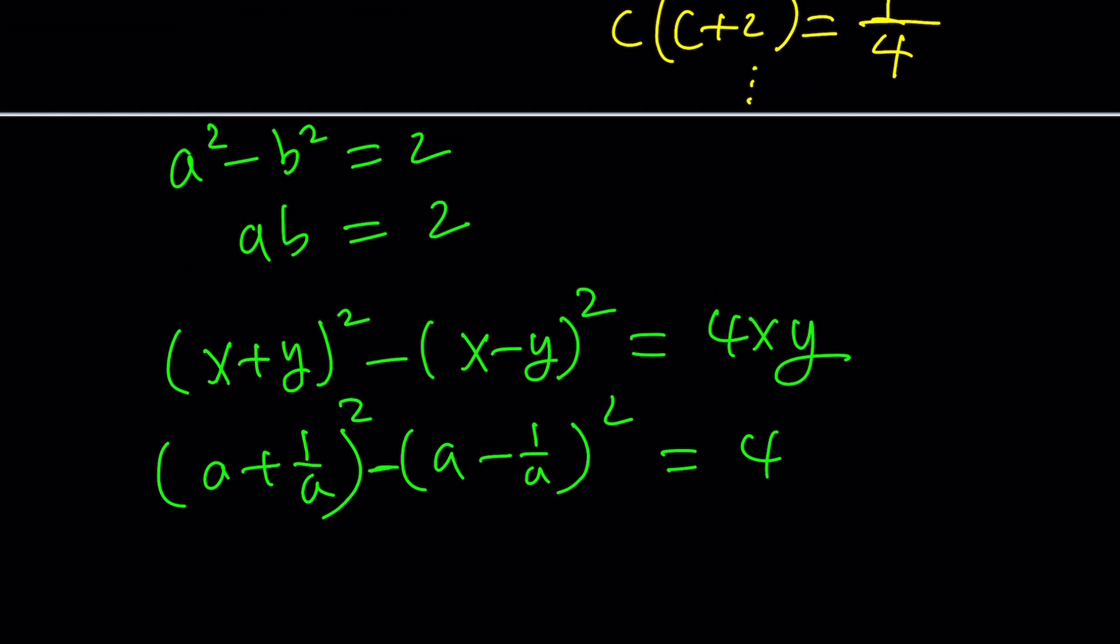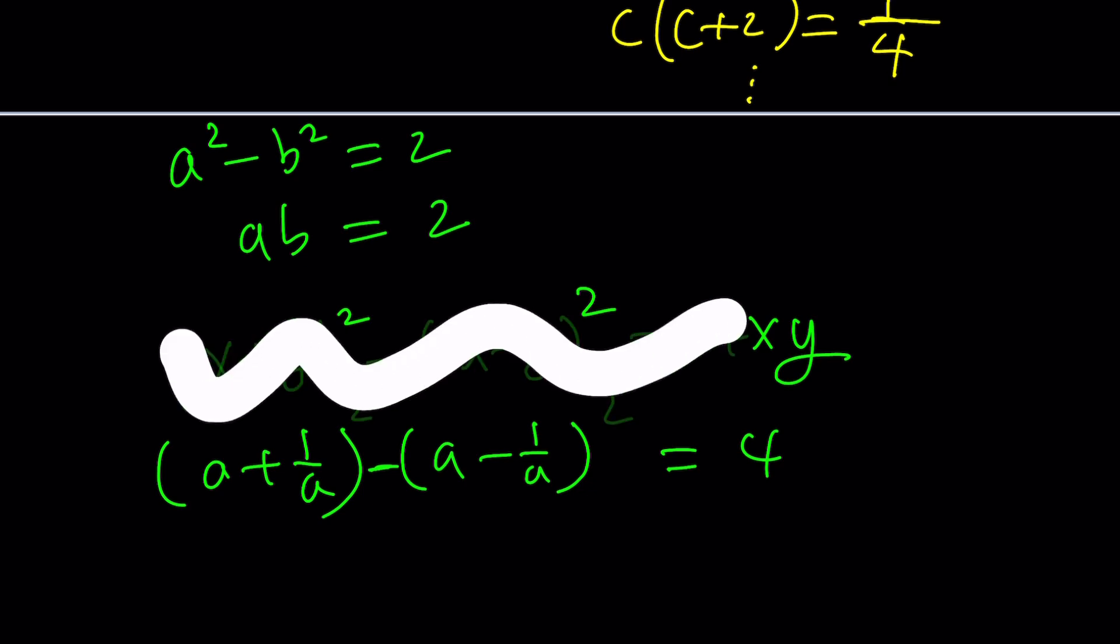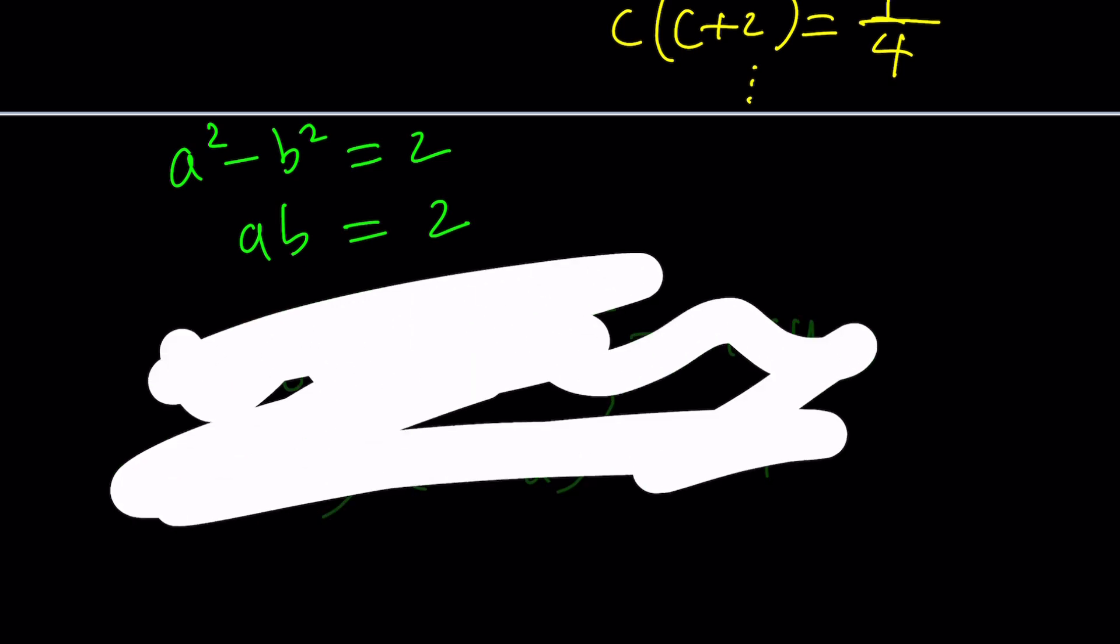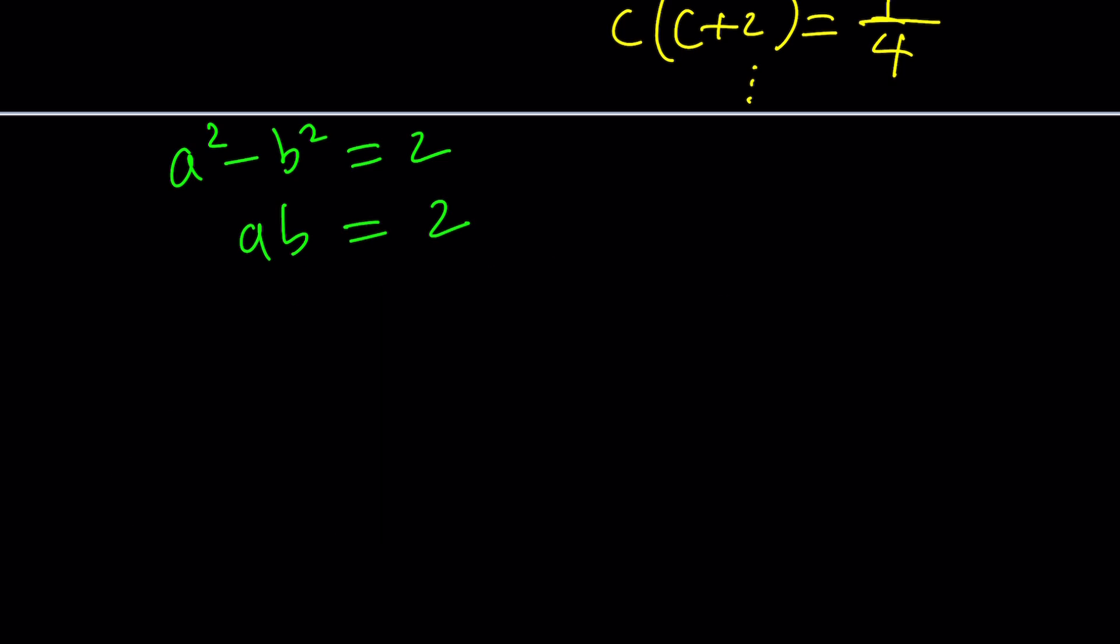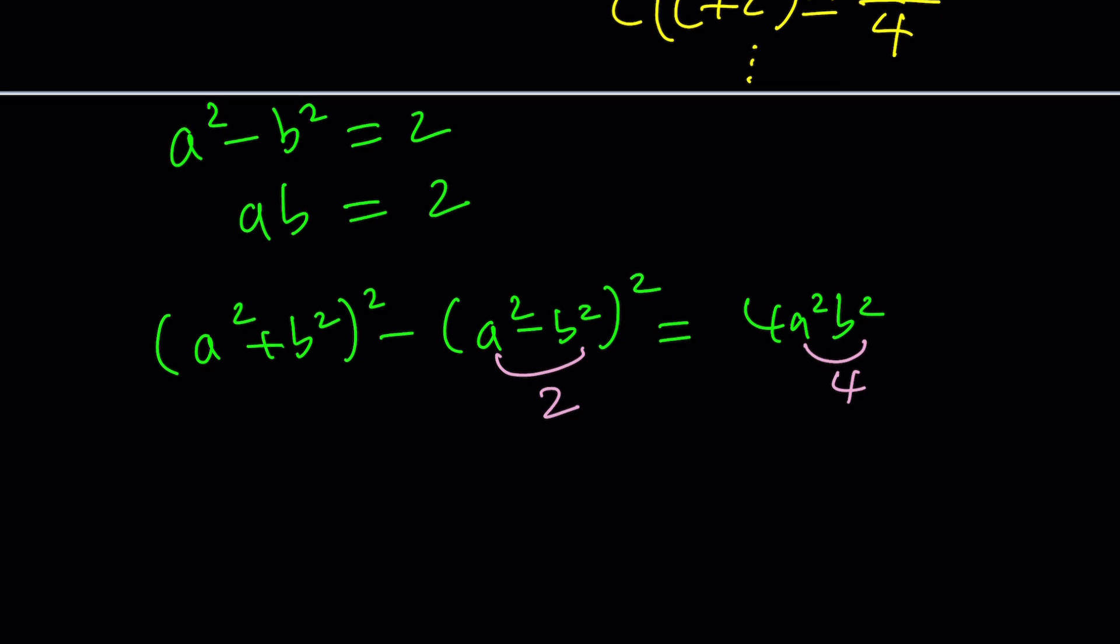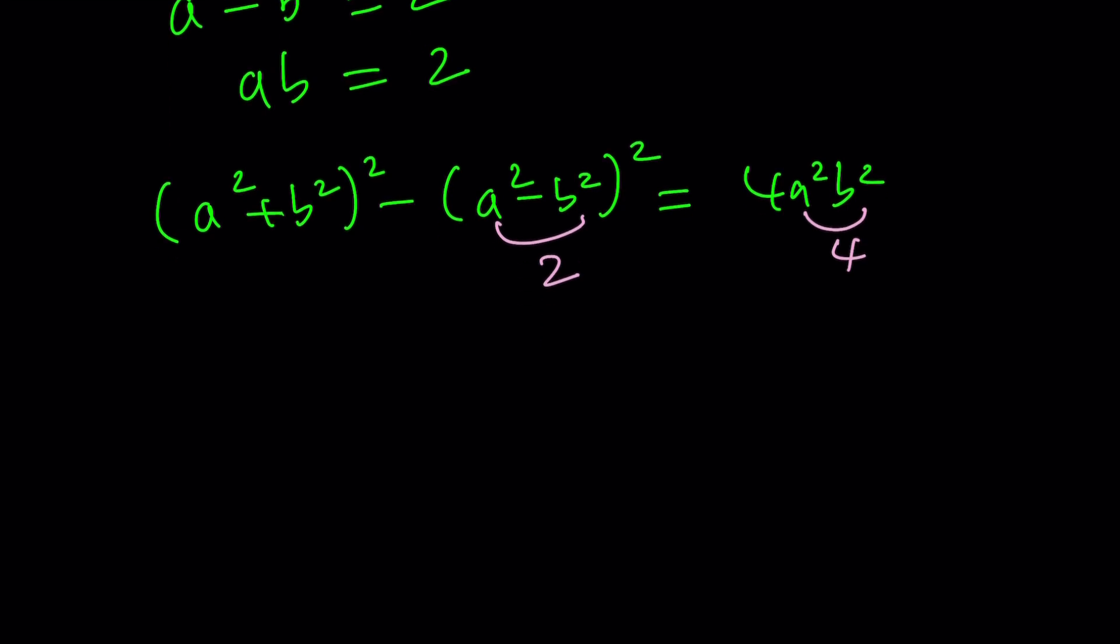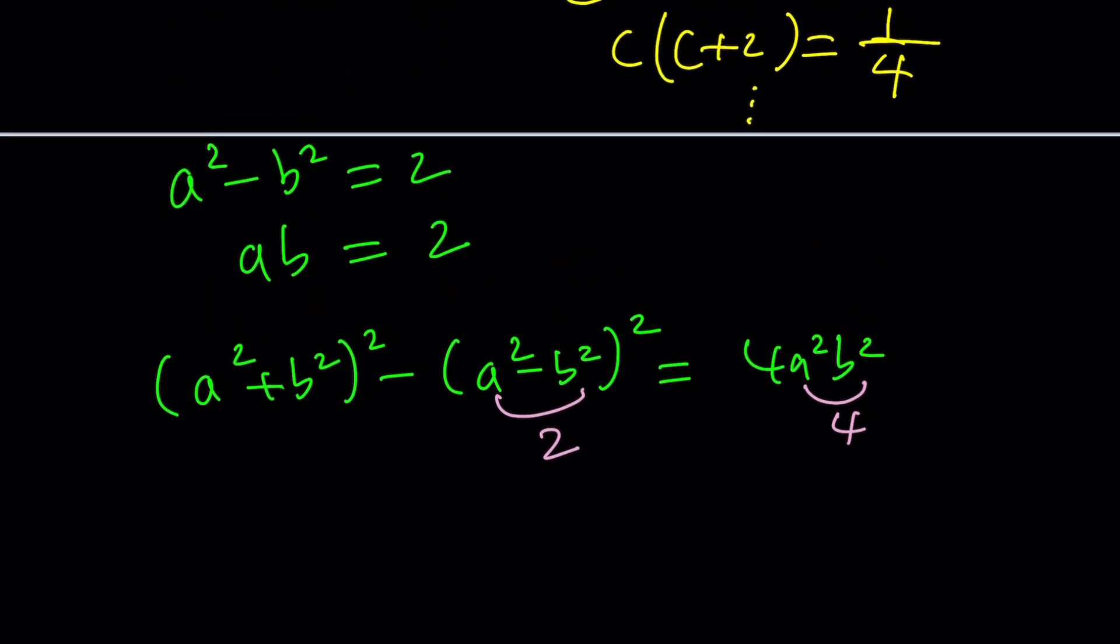Anyways, we're just going to apply it to this scenario here, which is A squared and B squared. If you square A squared plus B squared and A squared minus B squared, and you subtract them, you will get 4 A squared B squared. Beautiful. Because we know what this is. This is 2 and this is 4. And then we can just go from there.